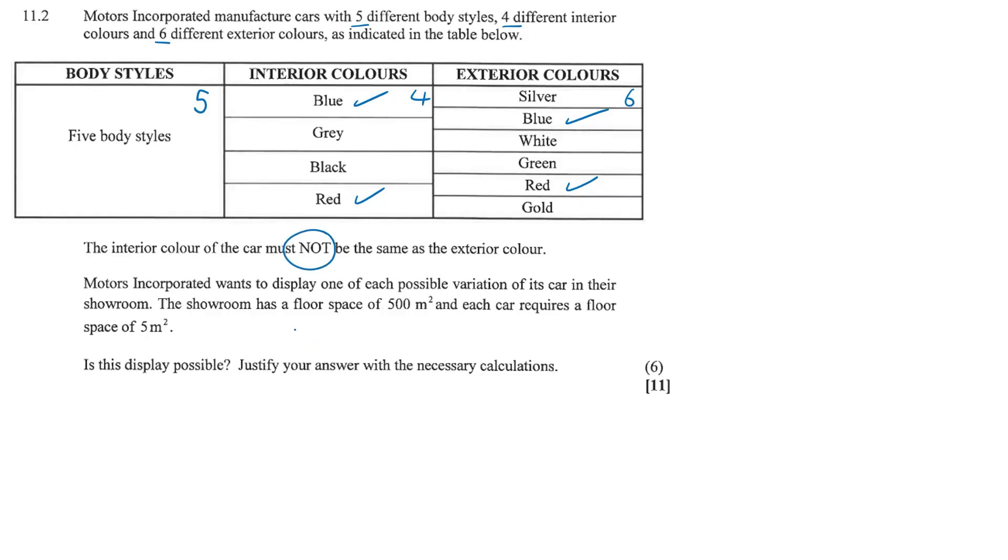We have 5 different body styles. Since there have been two repeats, for now we're just going to work with the gray and the black. So that's going to be 5 times 2 times 6. We're not factoring the blue and the red yet in our first bracket.